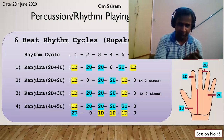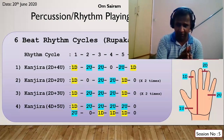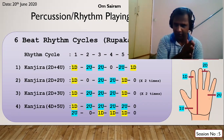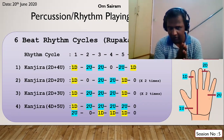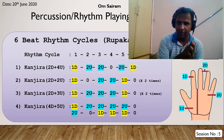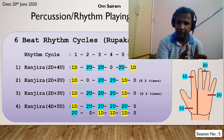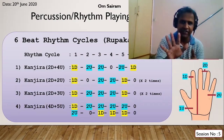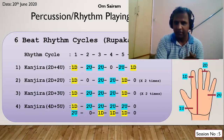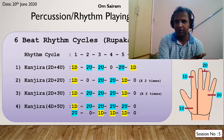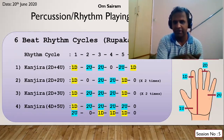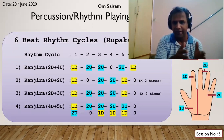In Carnatic music, the six beat cycle is called Rupaka talam. Don't confuse it with Hindustani Rupaka tala - they are different. The Hindustani equivalent for Rupaka talam is Dhadra thal, which is also a six beat cycle. It goes in patterns of three-three or six.